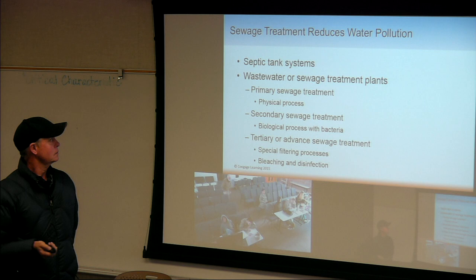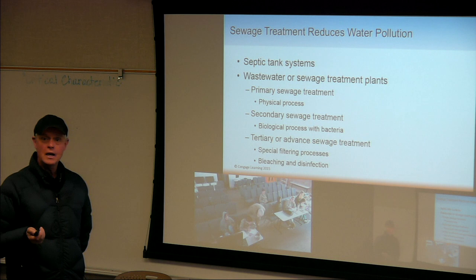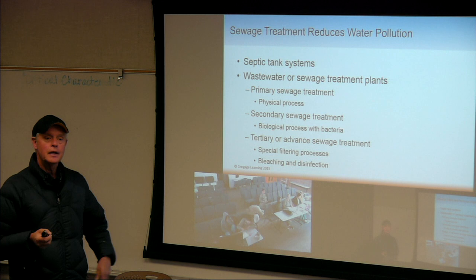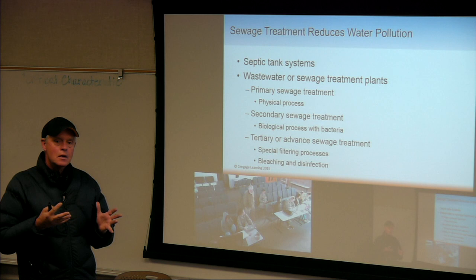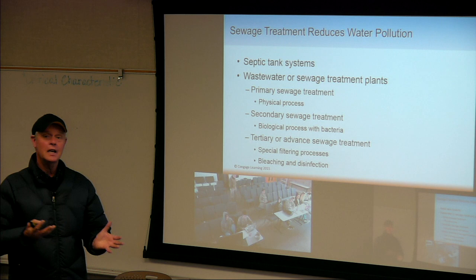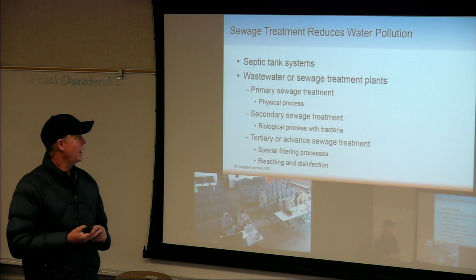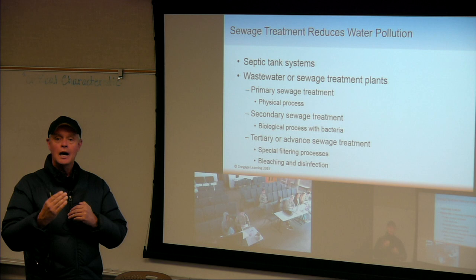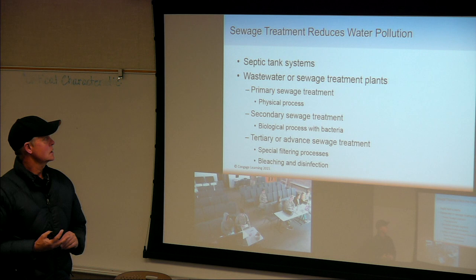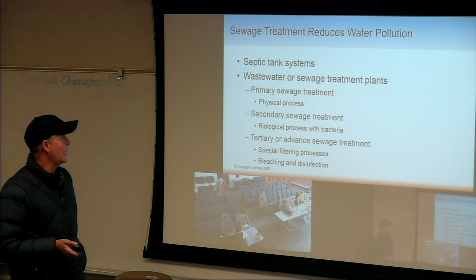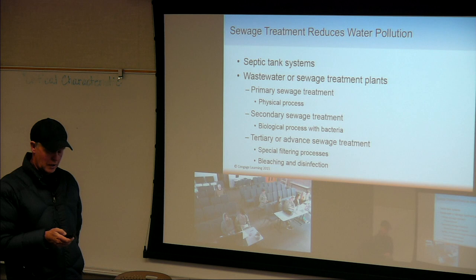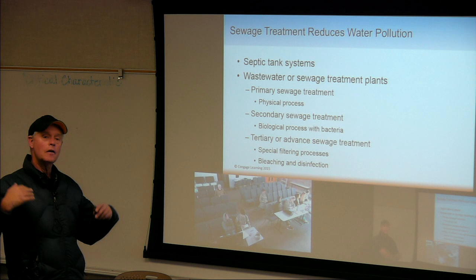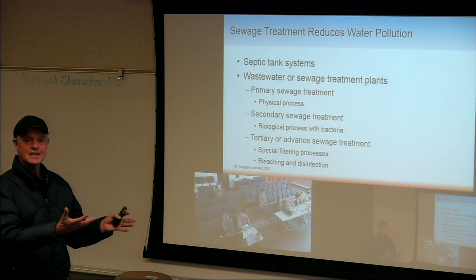Sewage treatment reduces water pollution. Septic tanks are great but inadequate — they're anaerobic and can only treat to a certain level, and septic waste from septic tanks is quite toxic. Even at Victor Valley Wastewater Treatment Plant, when a septic tank is being pumped, they have to let it into the system slowly because it can actually upset the ecology over there. Wastewater or sewage treatment plants have three phases. Primary sewage treatment is a physical process — all the stuff thrown down the toilet that doesn't belong basically gets scraped off the top.